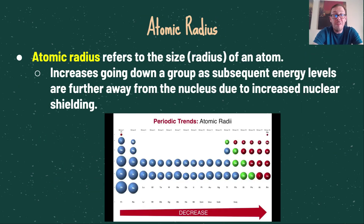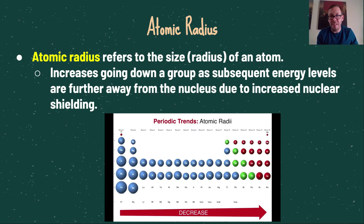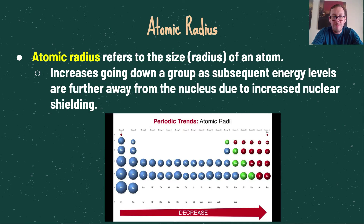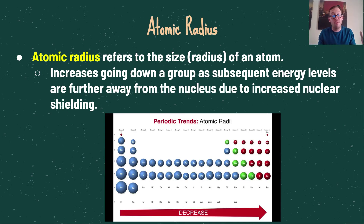Next, let's focus on atomic radius, which refers to the size of an atom. We can think about this in an inverse way relative to ionization energy — as the radius increases, less energy is required to remove an electron from the outer shell because it is further from the nucleus, has less Coulombic attraction, and therefore requires less energy to remove. Atomic radius increases as we go down a group, as subsequent energy levels are further away from the nucleus due to increased nuclear shielding, and the radius of the atom simply gets larger.